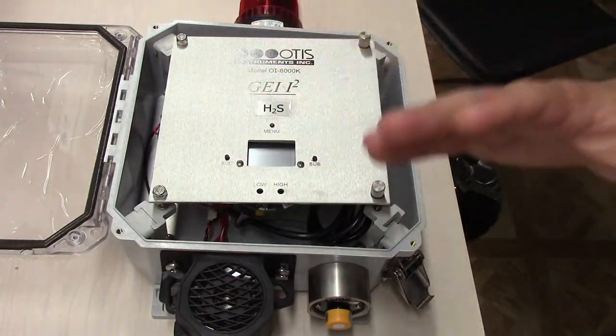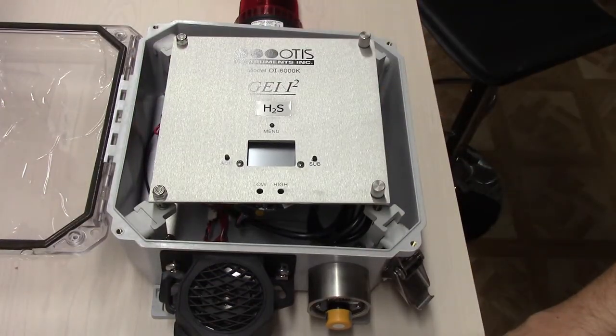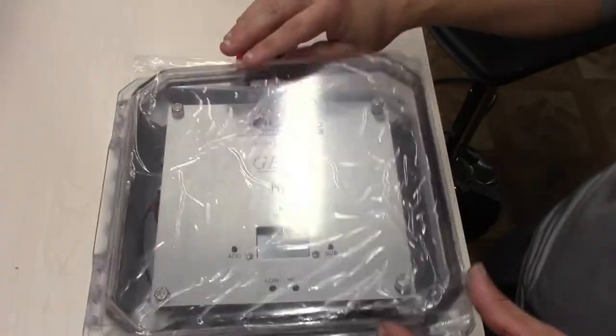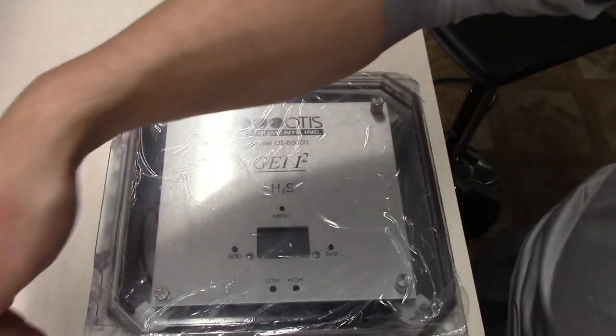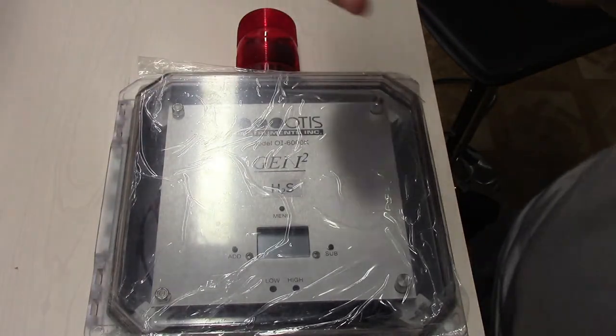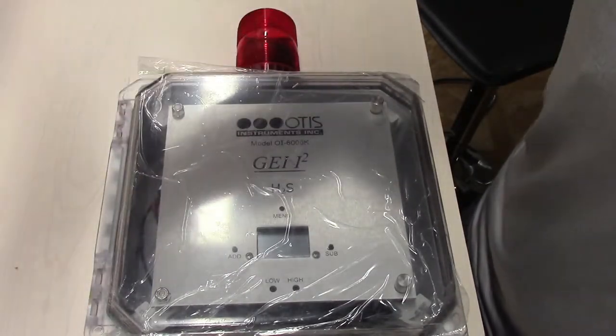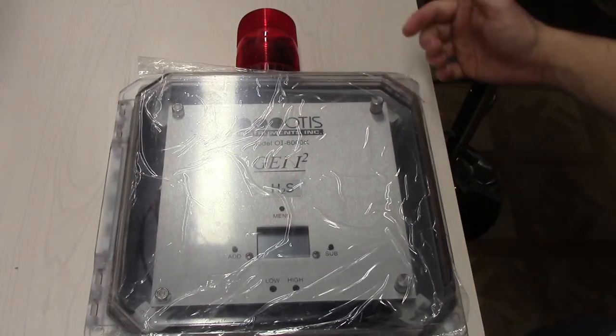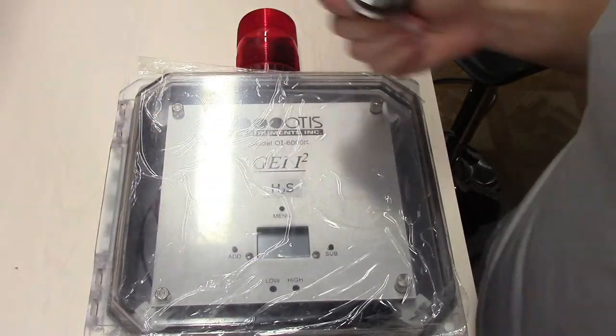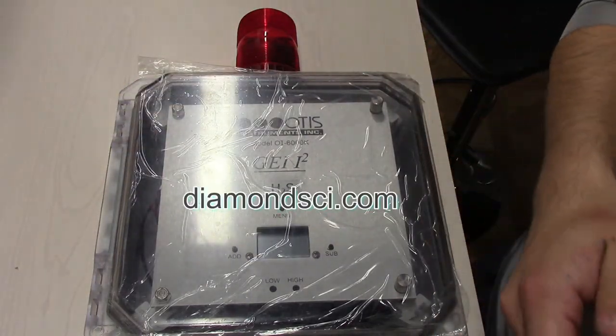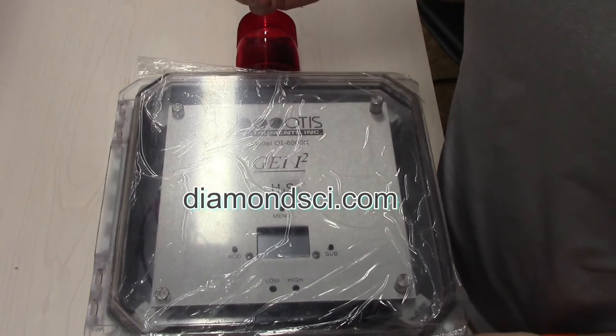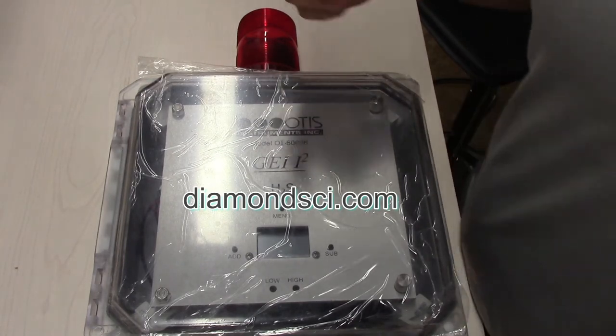The dimensions, hard to tell from the video, but it's about 10 inches by 10 inches and then 5 inches tall. So yeah, this is the OI 6000K from Otis Instruments. It's available on our website, diamondsci.com. Thanks for watching.